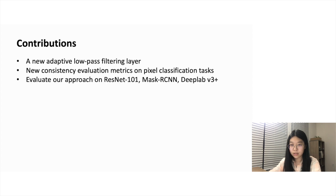In conclusion, we summarize our contributions on three fronts. First, we introduce a new adaptive low-pass filtering layer, which can be easily plugged into convolutional architectures. Second, we propose two consistency evaluation metrics on pixel classification tasks. Lastly, we compare our approach with strong baselines, including ResNet-101, Mask R-CNN, and DeepLab V3+.